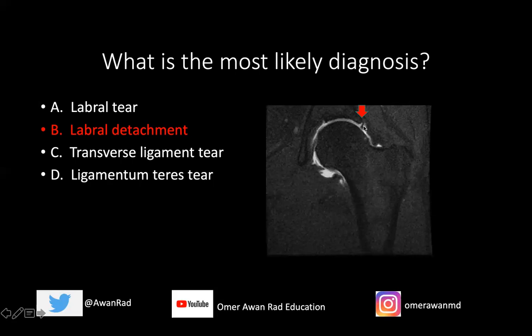The labrum itself is not torn, but this is a case of labral detachment because the labrum should be situated at the labral-chondral junction. Instead, we have contrast imbibing between the cartilage of the acetabulum and the labrum itself, which we should never see. The fact that contrast extends at the labral-chondral junction, separating the bone and cartilage of the acetabulum from the labrum, indicates a labral detachment.